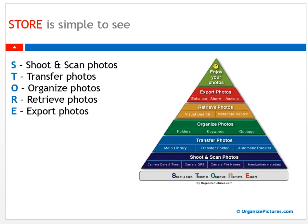The last slide for this video is a picture view of the system. STORE is simple to see, simple to remember, and simple to use. Let me explain this pyramid: STORE stands for shoot and scan photos, transfer photos, organize photos, retrieve photos, and export photos — and they are like layers that build on each other. We start with creating the photos at the bottom layer: shoot and scan. This is when we shoot pictures with a phone, camera, or tablet, or scan older printed pictures to create digital images. This is the creation phase.